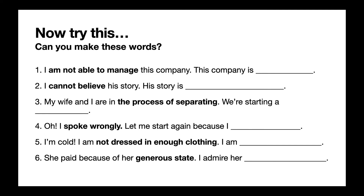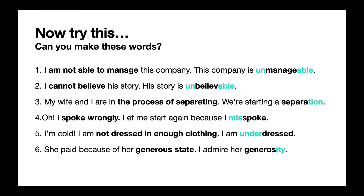Let's try another exercise. Can you make these words? Number one: I'm not able to manage this company — this company is unmanageable. So we start with the verb manage, we make 'un' the prefix to negate it, and then put the '-able' suffix at the end to make unmanageable. Number two: I cannot believe his story — his story is unbelievable. Similar to number one, we have the verb believe in the middle, and we put 'un' at the beginning and '-able' at the end.